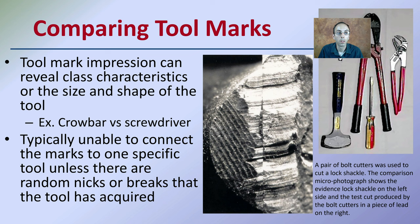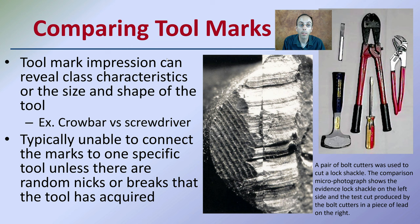When we compare tool marks, there are a lot of different types of tools, but tool mark impressions can reveal class characteristics — the size and shape of the tool. For example, a crowbar is going to leave a much larger impression than a small screwdriver.